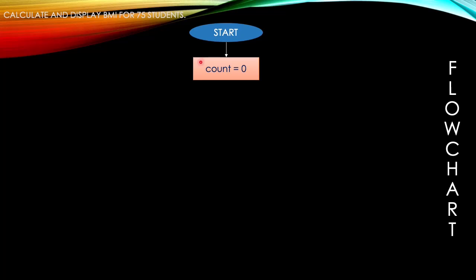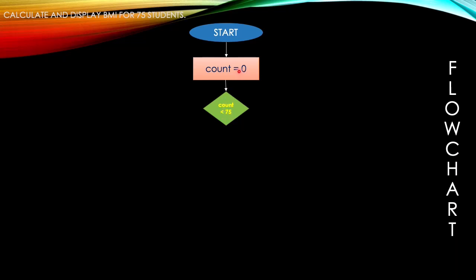I name the counter as 'count' and I want to start counting from zero, so count equals zero. Next we have our condition: count less than 75. Zero less than 75 — that means 75 students total is 75.